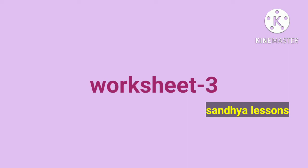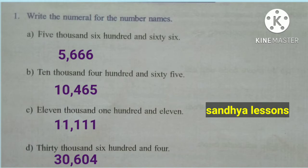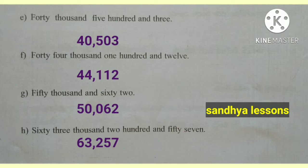Worksheet 3. First: Write the number names for the following numbers by keeping commas: 5,666; 10,465; 11,111; 30,604; 40,503; 44,112; 50,062; 63,257.